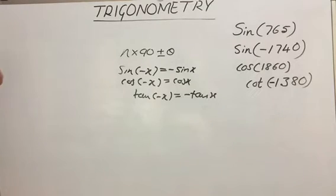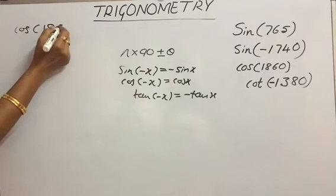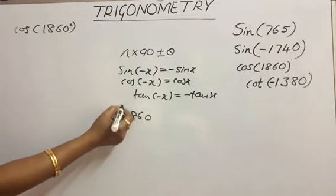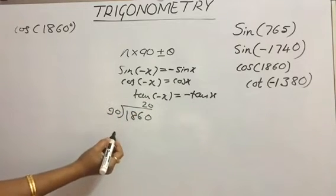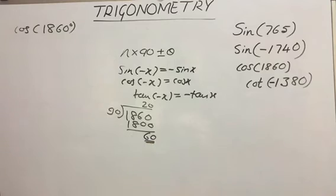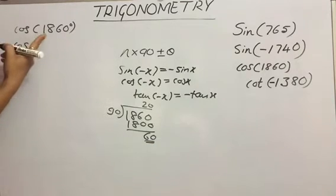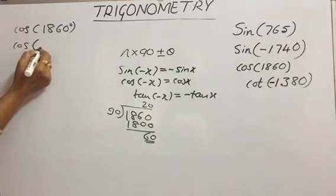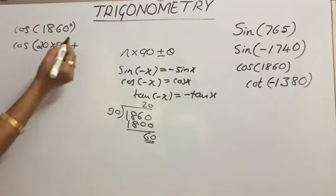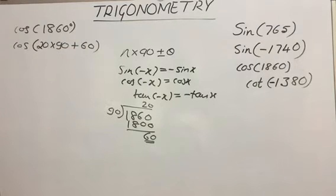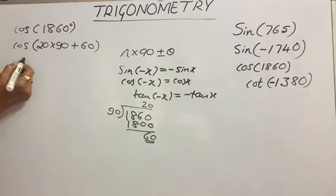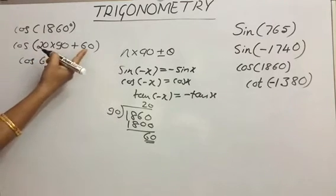Now let's move on to cos(1860°). Divide 1860 by 90. We get 20 times, so 20×90 = 1800. The remainder will be 60. So write cos(1860°) as cos of n×90 + θ, where n = 20 and θ = 60°. Check n = 20, which is even, so the ratio remains as it is. We get cos 60.